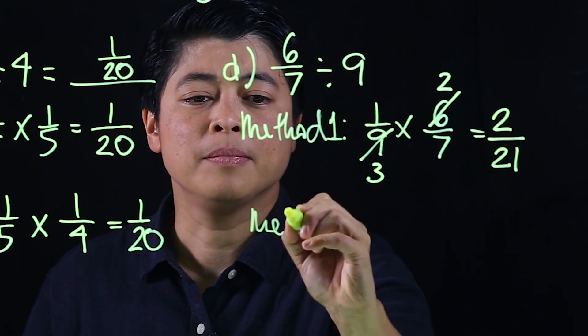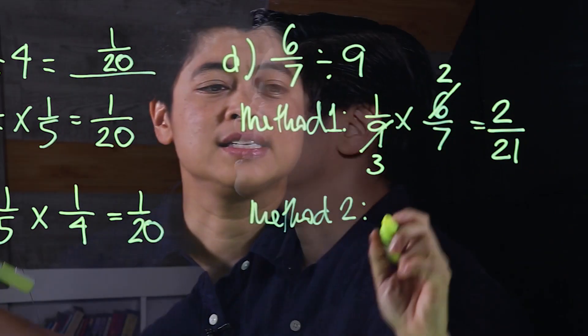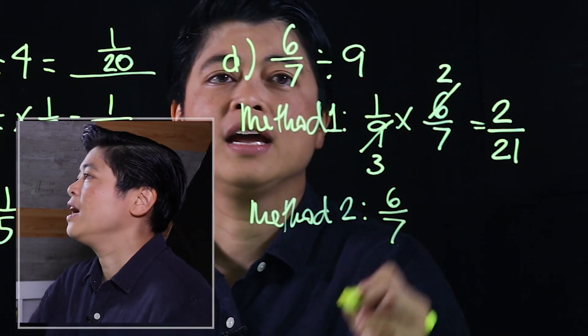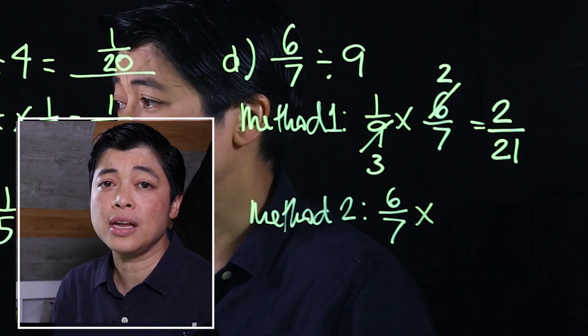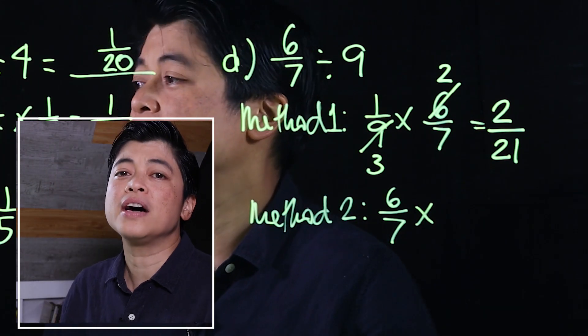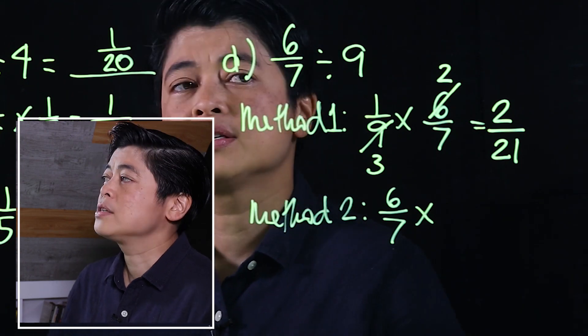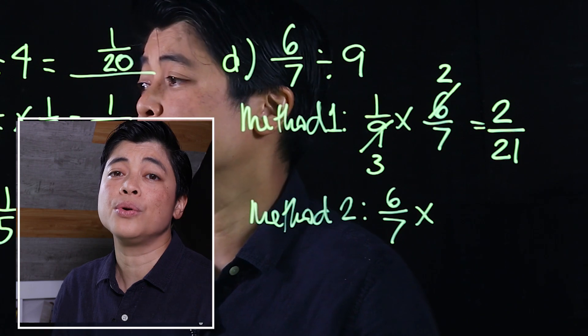Moving on to method 2. We take 6/7 and we're going to change the operation to multiplication. When we do, we take the reciprocal of the fraction after. Since it's a whole number, the fraction expression is 9 over 1.